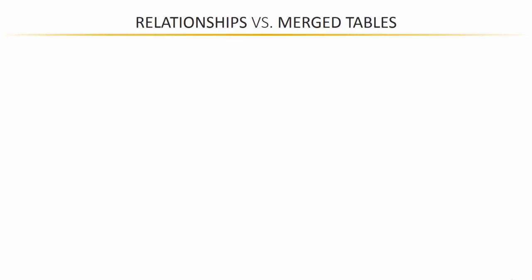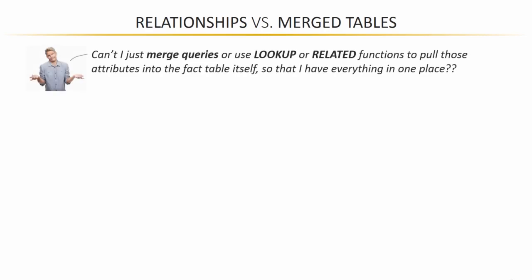One last conceptual lecture before we get our hands dirty and actually create some table relationships. I really just want to drive home this very important idea of relationships versus merging tables. I know some of you are thinking: can't I just merge my queries or use familiar functions like VLOOKUP, RELATED, or index-match to pull attributes into the fact table itself so that I have everything in one place?